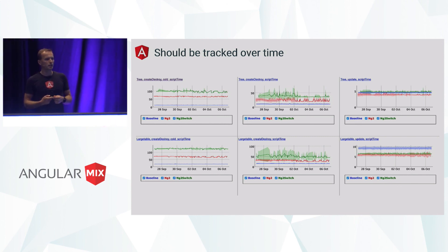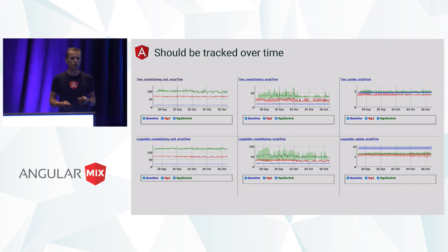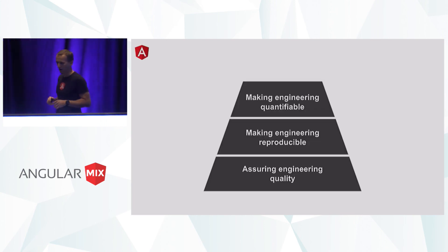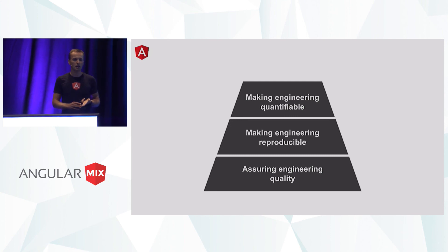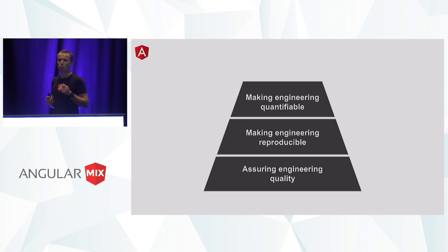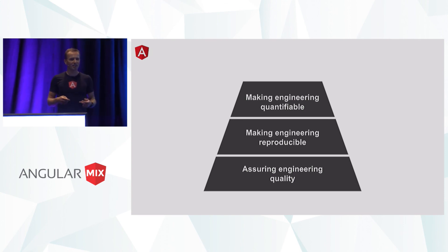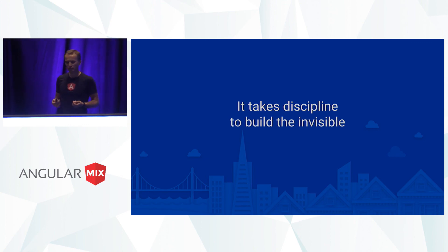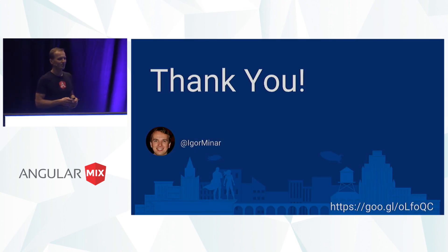Once we have all of these things in place, now we can start iterating and driving towards the goal. I believe this is how we can be successful at engineering software projects. So I covered quite a lot of ground. We talked about building the invisible, and I talked about the three areas: ensuring quality through automated testing, making engineering reproducible by controlling variables, and making engineering quantifiable by specifying good goals, picking good metrics, and making sure that we measure them in the right way and track them over time. I know that all of these things take a lot of work, and it takes discipline to set it all up. But I strongly believe that it takes discipline to build the invisible — and unless we do this, we will keep being surprised by things changing without us knowing, or not being able to achieve the goals we set. Thank you very much.